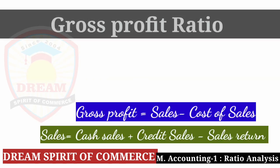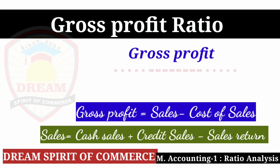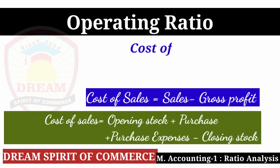Friends, now we are starting the formulas. First: Gross Profit Ratio. Gross Profit Ratio equals Gross Profit divided by Sales multiplied by 100. If Gross Profit is not directly given, then Gross Profit is equal to Sales minus Cost of Sales. Sales equals Cash Sales plus Credit Sales minus Sales Return.